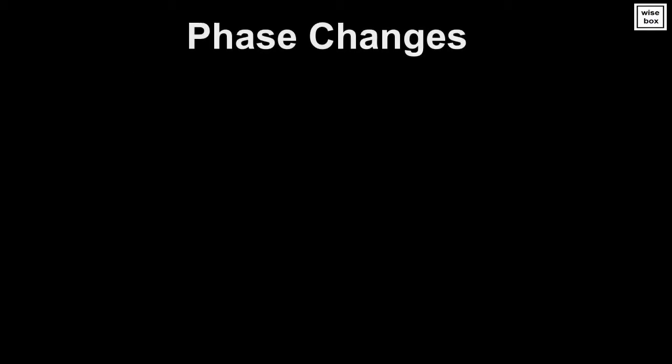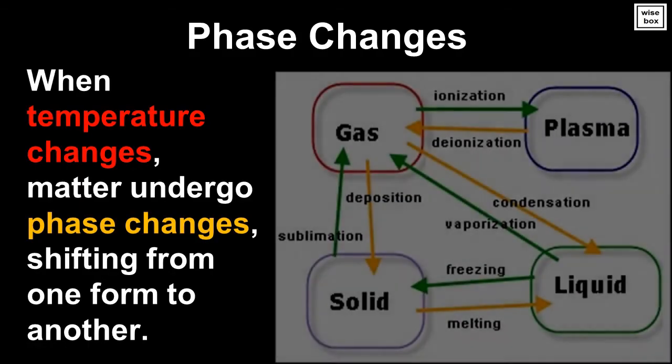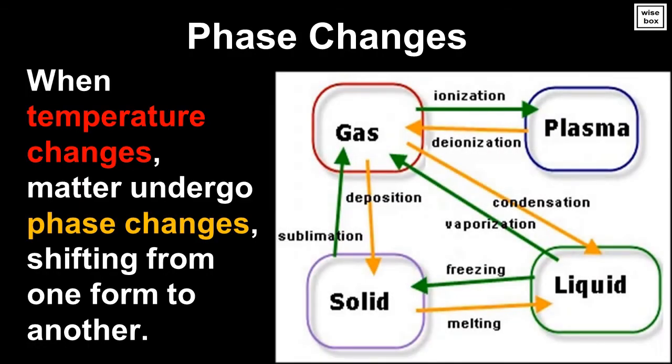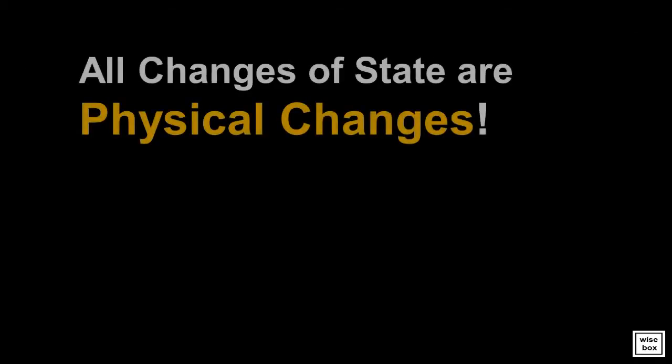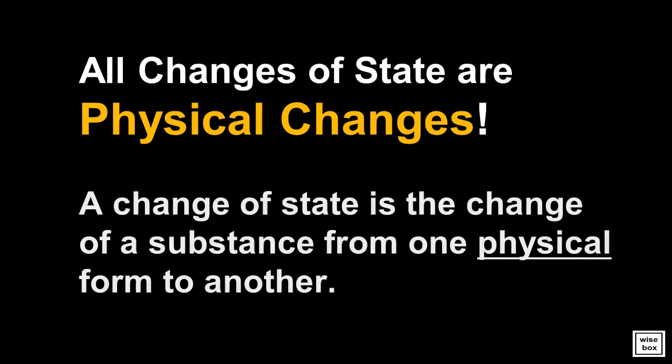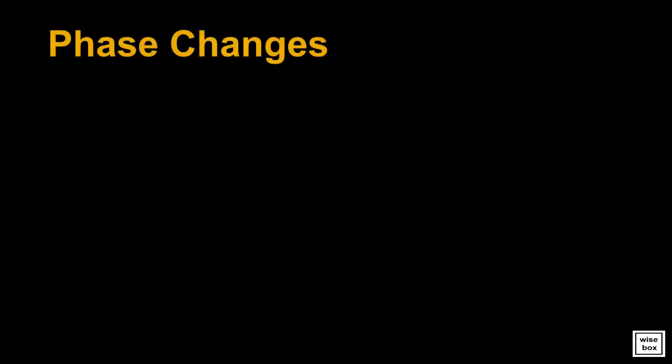Phase changes. When temperature changes, matter undergoes phase changes, shifting from one form to another. All changes of state are physical changes. A change of state is the change of a substance from one physical form to another.